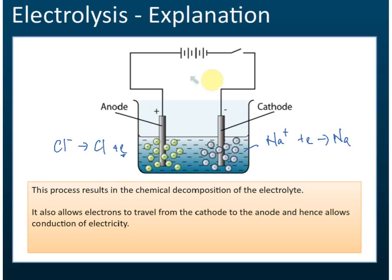So that is what happens during electrolysis. It also allows electrons to travel from the cathode to the anode and hence allows the conduction of electricity. So new substances form around the cathode and anode, and at the same time it conducts electricity. When electricity passes through the electrolyte, chemical reactions occur.